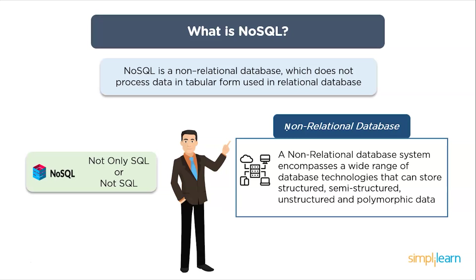Now we shift to NoSQL. NoSQL is a non-relational data management system that does not require a fixed schema. It avoids joins and is easy to scale. The major purpose of using a NoSQL database is for distributed data storage, as we need humongous data storage. NoSQL is used for big data and real-time web apps. For example, companies like Twitter, Facebook, and Google collect terabytes of user data every single day. NoSQL database stands for Not Only SQL or Non-SQL.